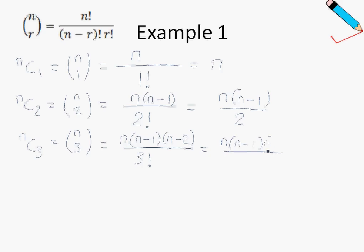So this is n, n minus 1, n minus 2. And 3 factorial is just 1 times 2 times 3, which is 6. One more example.